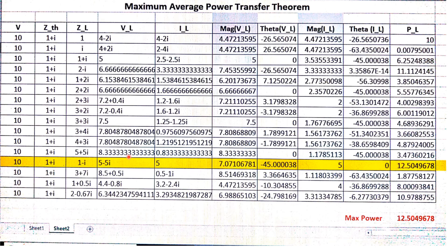This is an open challenge — you can try different values of ZL in the given column. Keep the real part positive, since resistance is never negative. You can try any imaginary part, either positive or negative, and you will always get a value smaller than 12.5W, which is the value obtained when ZL equals the complex conjugate of Z_thevenin. For any other questions regarding the max power transfer theorem, you can email me, send questions on MS Teams, or WhatsApp. Thank you.